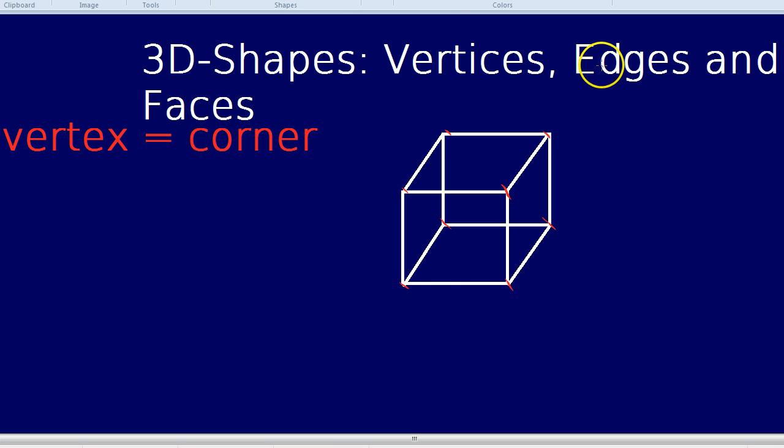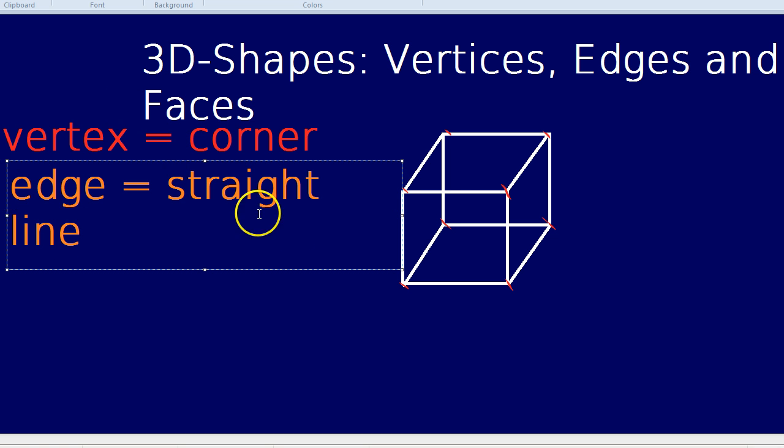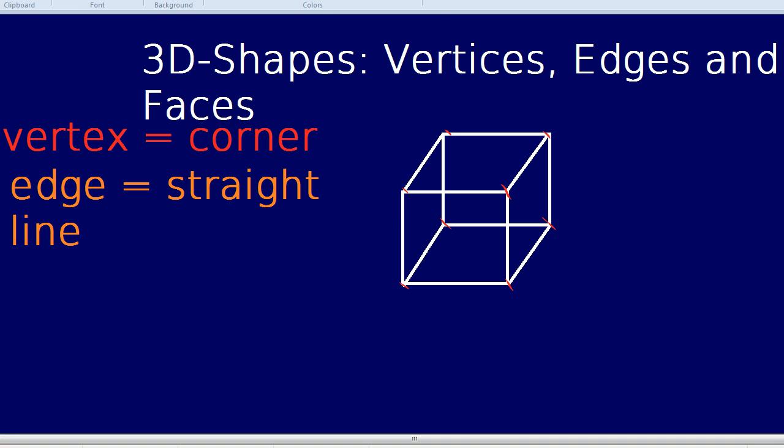What's an edge? An edge is just a straight line. How many edges does a cube have? It has 1, 2, 3, 4, 1, 2, 3, 4 and 1, 2, 3, 4 for a total of 12. That's 12 edges in a cube.